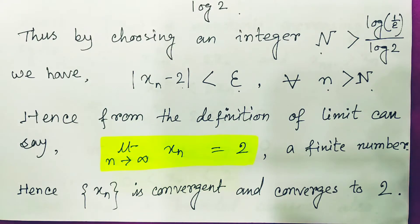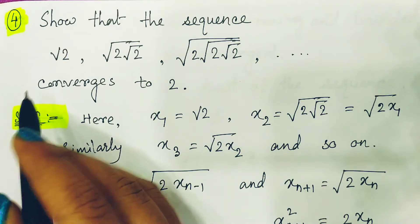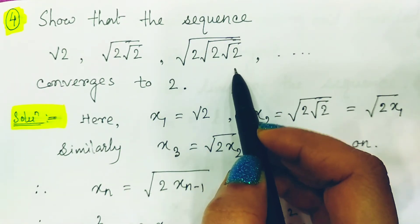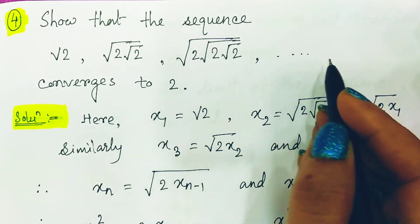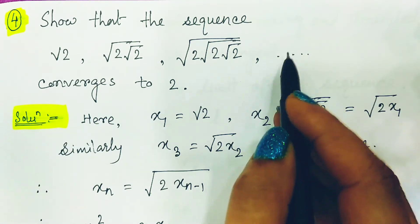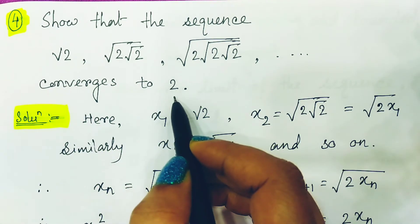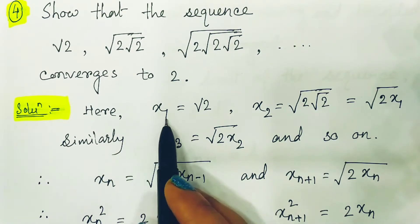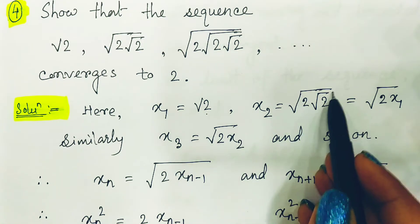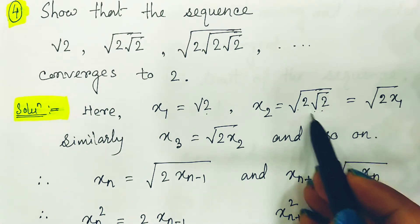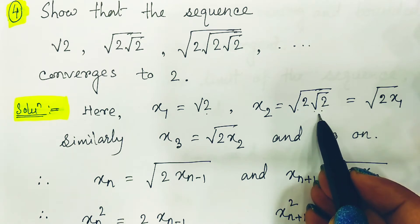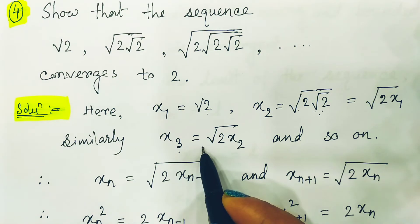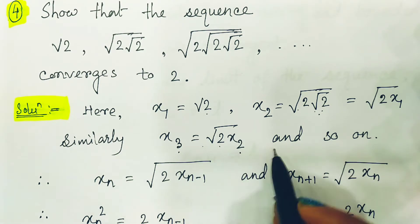Now for one more example: given the sequence √2, √(2√2), √(2√(2√2)), prove that this sequence is convergent and converges to 2. Observing the sequence carefully, x1 = √2, and x2 = √(2·x1). Likewise x3 = √(2·x2), and so on. So in general, xn = √(2·xn-1) and xn+1 = √(2·xn).